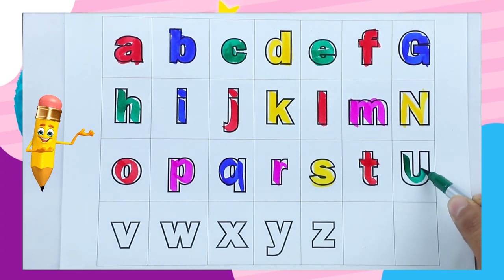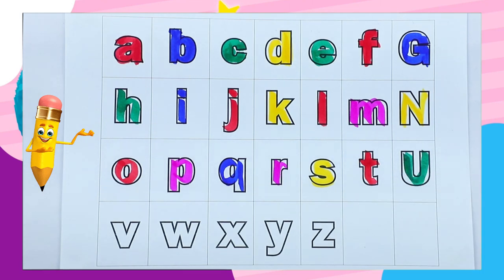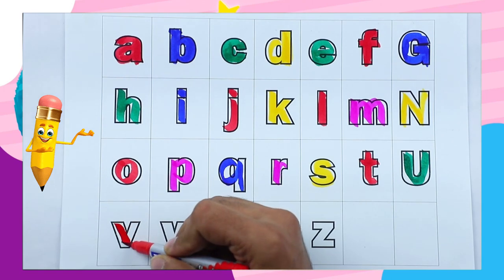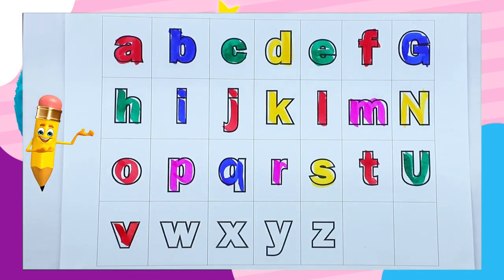Green color, u, u for umbrella. Red color, v, v for van.